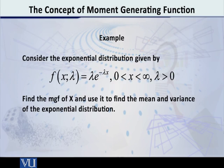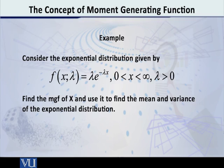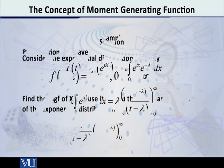Let me explain this with the help of an example, because without an example it may be a bit unclear. Let us consider the exponential distribution — the well-known exponential distribution given by f of x with parameter lambda equal to lambda into e raised to minus lambda x, where x goes from 0 to infinity, and lambda, the rate parameter, is greater than 0. Let us first find the MGF of this distribution and then utilize it to find the mean and the variance.